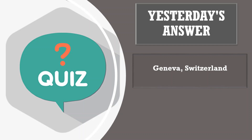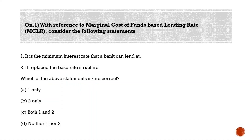Switzerland — that is the right answer. Now let's start today's session. First question: with reference to Marginal Cost of Funds Based Lending Rate (MCLR), consider the following statements. Statement one: it is the minimum interest rate that a bank can lend at. Statement two: it replaced the base rate structure. The correct answer is option C — both statements are correct.